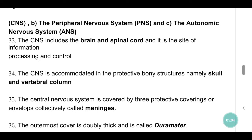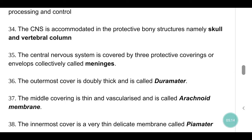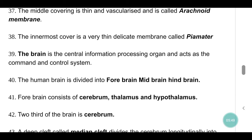The central nervous system includes the brain and spinal cord and it is the site of information processing and control. The CNS is accommodated in protective bony structures namely the skull and vertebral column. The CNS is covered by three protective coverings collectively called meninges. The outermost cover is doubly thick and is called duramater. The middle covering is thin and vascularized and is called the arachnoid membrane.